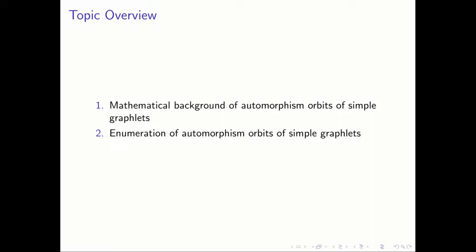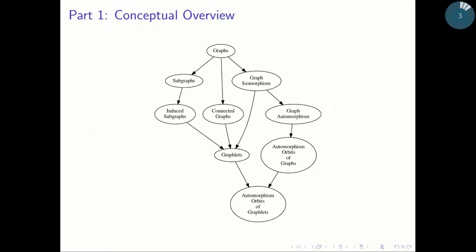I've broken the mathematical topics into two parts. The first is about mathematical foundations of automorphism orbits and graphlets, and the second is about their enumeration. Here's a conceptual overview that starts at the top and progresses downward. I'd like to start with explaining graphlets, so we'll need the concepts of subgraphs, induced subgraphs, connected graphs, and graph isomorphism. From there we'll go from graph isomorphism to graph automorphism, to automorphism orbits of graphs, and then tie it all together with automorphism orbits of graphlets.